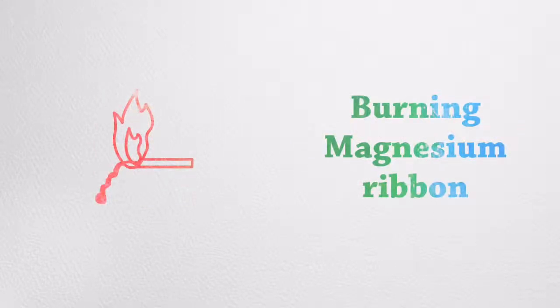Burning magnesium ribbon results in a dazzling white flame and changes to white powder. This white powder is magnesium oxide, formed due to the reaction between magnesium and oxygen present in air.